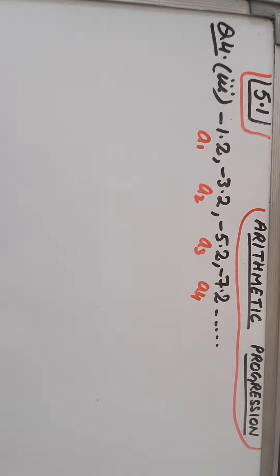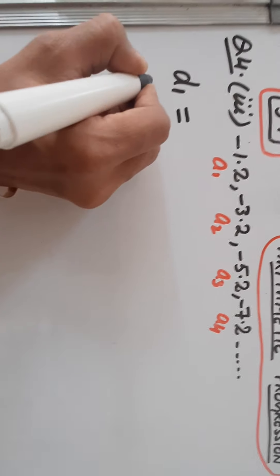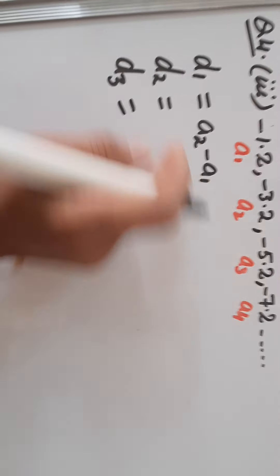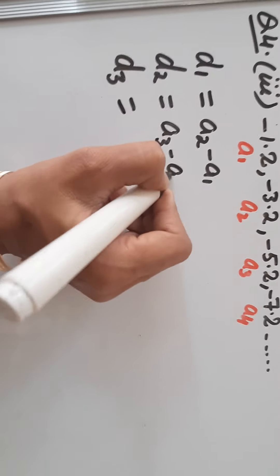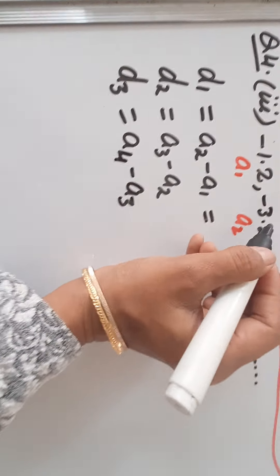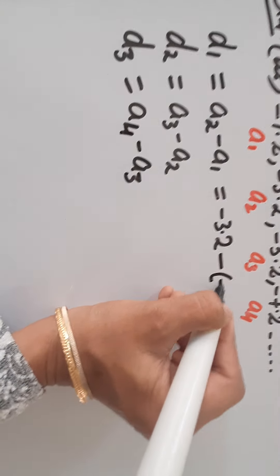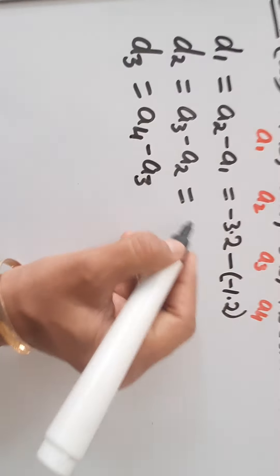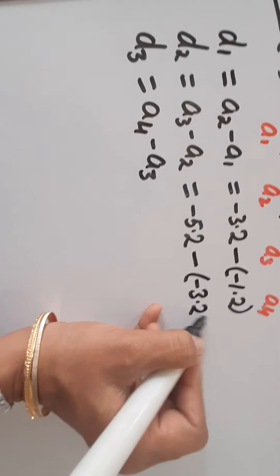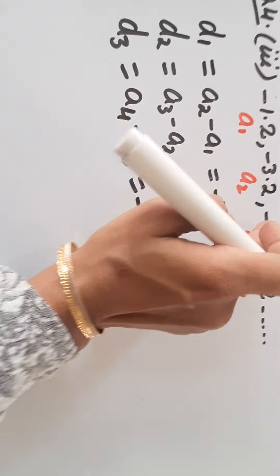So let us check whether this is an AP or not. We have to find out the common difference — D1, D2, and a minimum of 3 common differences. So D1 is A2 minus A1, D2 is A3 minus A2, and D3 is A4 minus A3. Let us put the values: A2 is -3.2, then minus A1. A1 is negative so we place a bracket. Similarly A3 is -5.2 minus A2, and A4 is -7.2 minus A3 which is -5.2.